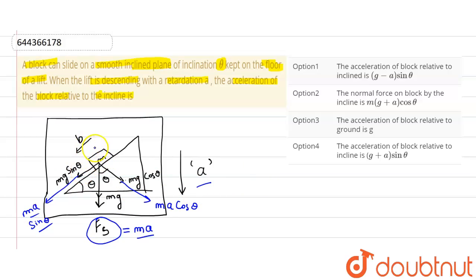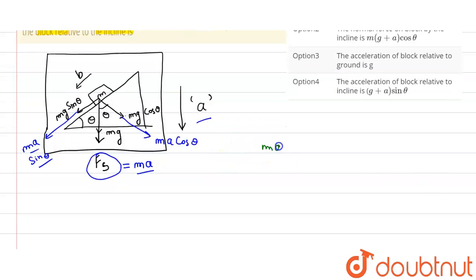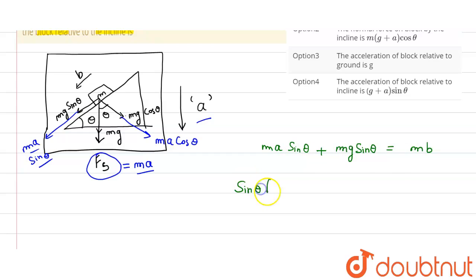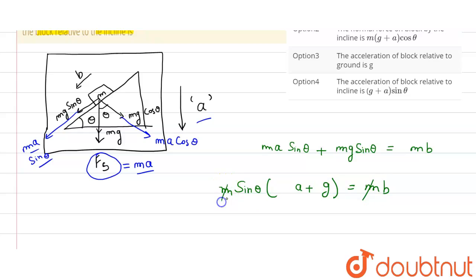Since this block is going down the incline with acceleration b, we write the equation: mg sin theta plus ma sin theta equals m times b. Taking sin theta and m as common, we get m sin theta times (g plus a) equals m times b. The mass m cancels out on both sides.